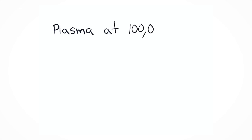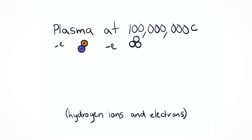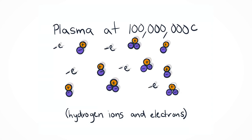To fuse, hydrogen isotopes deuterium and tritium must be at least 100 million degrees Celsius, at which point their electrons are ripped off, ionizing the gas into plasma, the fourth state of matter.